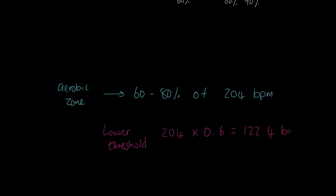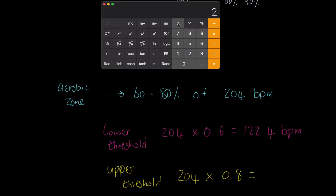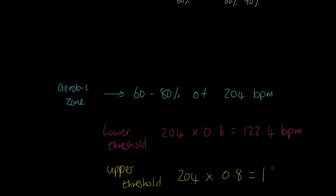Meanwhile, your upper threshold for the aerobic zone, this is your upper threshold for the aerobic zone, is going to be 204 multiplied by 0.8, which is the upper limit, and that's of course going to give us a value of, let me clear that, 204 multiplied by 80% or 0.8 gives us a value of 163.2 beats per minute.